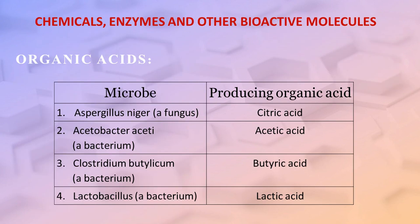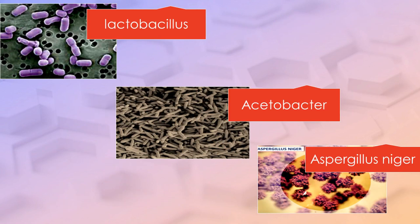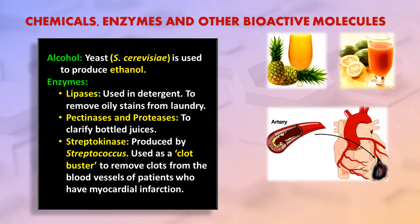The following are some organic acids produced by various microbes: the fungus Aspergillus niger produces citric acid; the bacterium Acetobacter aceti produces acetic acid; the bacterium Clostridium butylicum produces butyric acid; and the bacterium Lactobacillus produces lactic acid. The microscopic structures of Lactobacillus, Acetobacter, and Aspergillus niger can be observed.